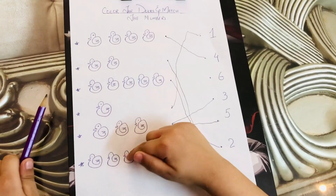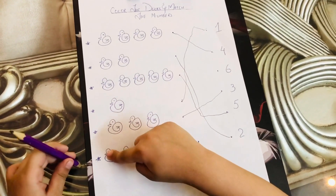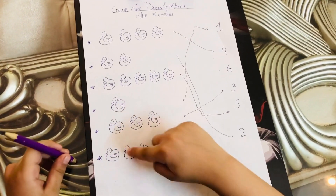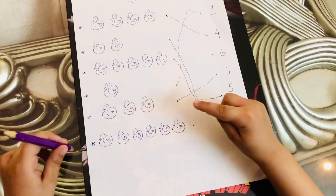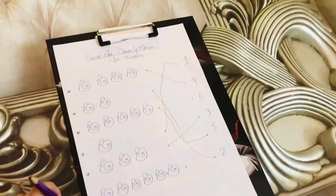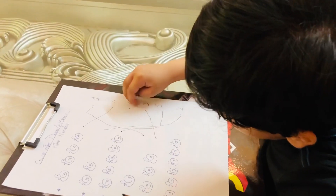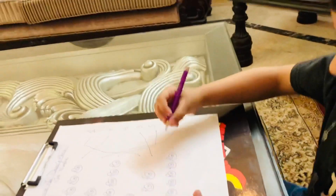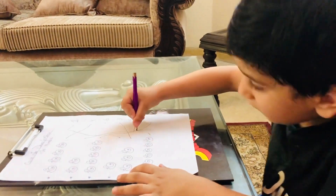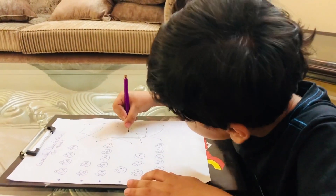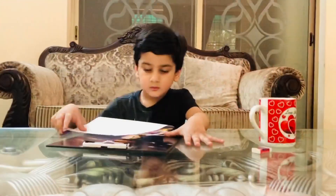Count again — 1, 2, 3, 4, 5, 6. Yes! Now find 6. Where is 6? Yes! Now join them. Excellent, Bilal!